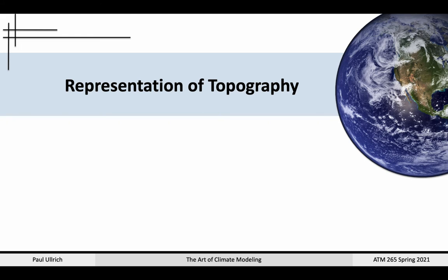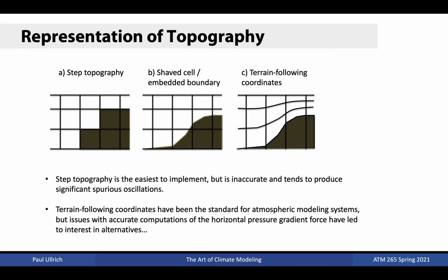Now that we've chosen our vertical coordinate system, we face the challenge of dealing with the bottom boundary condition. The Earth's rough topographic surface means that dynamical core developers need to correctly represent the boundary condition without driving artificial noise. There are generally three ways to represent topography in atmospheric models. First, step topography, where a cell is considered filled if a given fraction of it is underground, presenting a lateral boundary condition. Second, shaved cells or embedded boundaries, which modifies the numerical method to account for part of a cell being occupied by a solid. Third, modifying the vertical coordinate system so that the planetary surface is also a coordinate surface, usually via coordinate stretching.